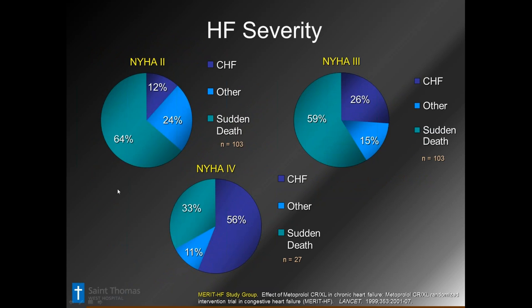In terms of severity, the differences between heart failure classes show that morbidity and sudden death really climbs, and CHF symptoms go way up as you get into class 4, where basically they're having a very difficult time functioning even normally — just very short of breath going around the home or to the mall.